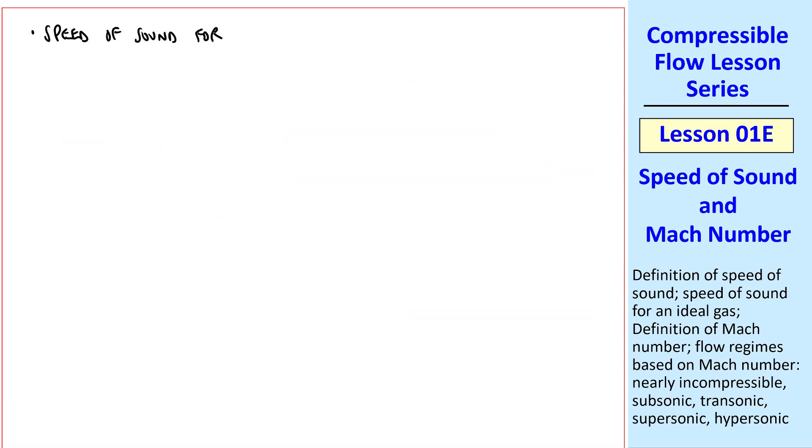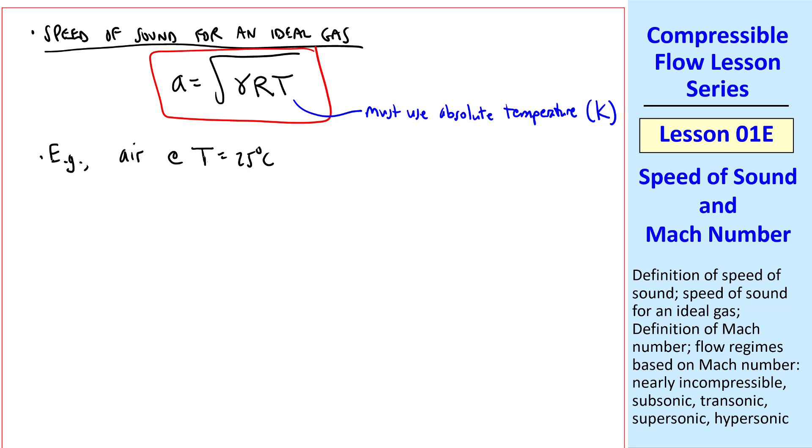Now let's consider the speed of sound for an ideal gas. It turns out that A is the square root of gamma RT. And I comment that you must use absolute temperature. In other words, Kelvin instead of degrees C in SI units. For example, let's take air at 25 degrees C. We can calculate the speed of sound. For air, gamma is 1.40. Specific gas constant is 0.2870 kilojoule per kilogram K.